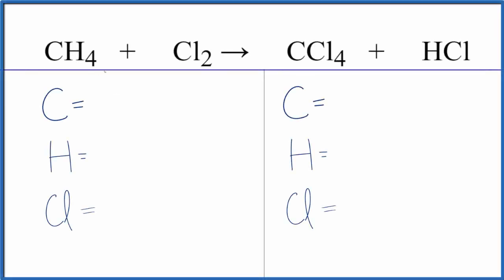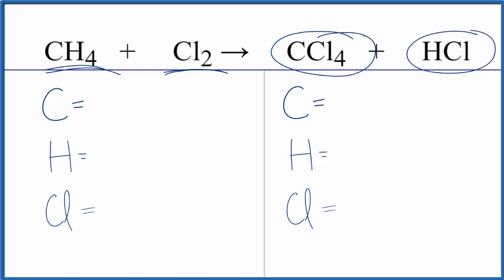In this video, we'll balance the equation for CH4 plus Cl2. This is methane plus chlorine gas. In the products, we get carbon tetrachloride and hydrochloric acid. This is how most of the carbon tetrachloride that's used in industry — and there's a lot of it used — is made.